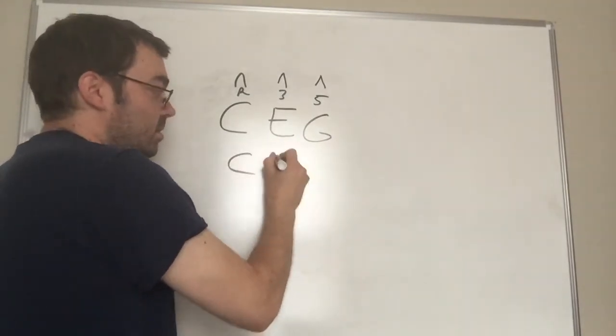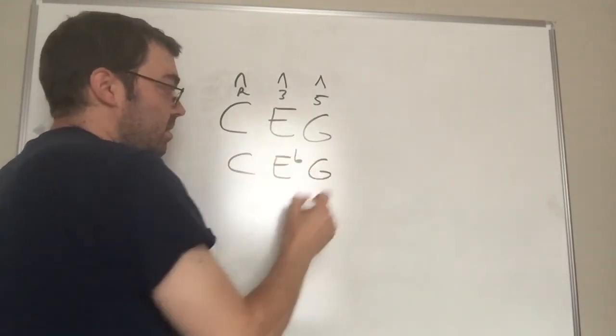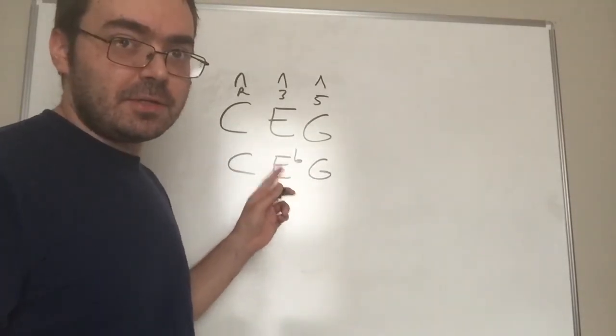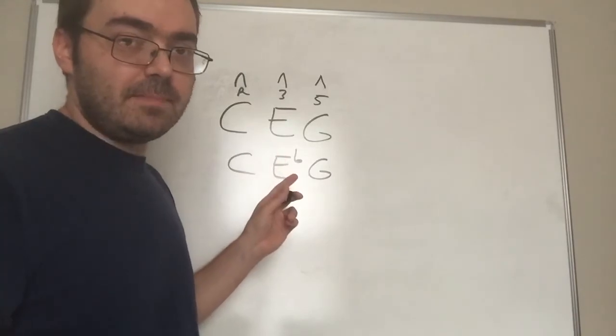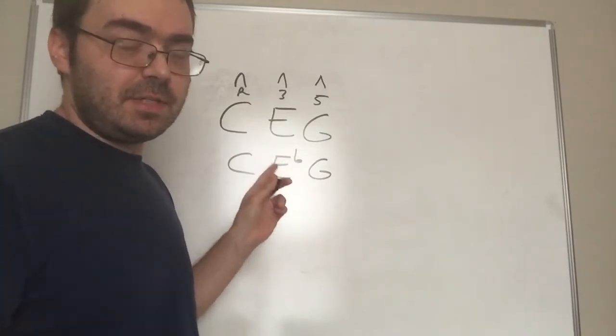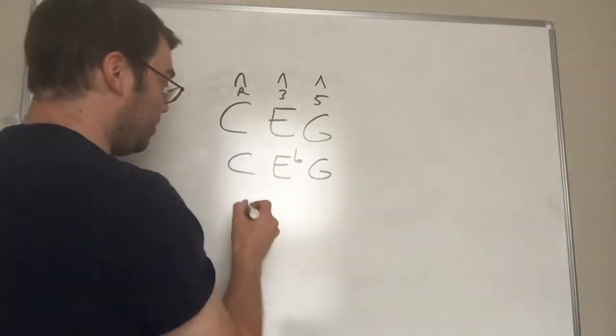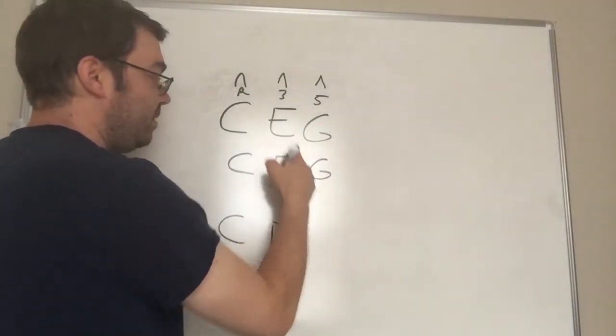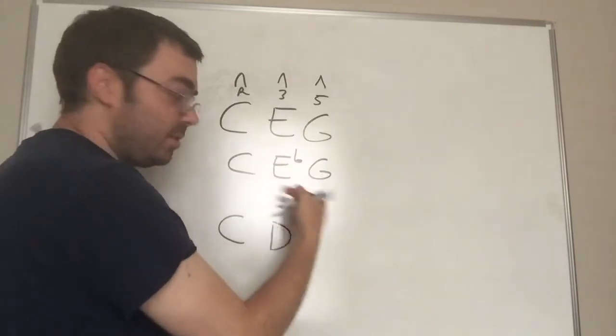And below is the root third and fifth of a C minor chord. Now whether it's a major scale or a minor scale that the chord is coming from, the II in this case is going to be a D. So, what we do is we take the third of each of these chords and move it down to the II.